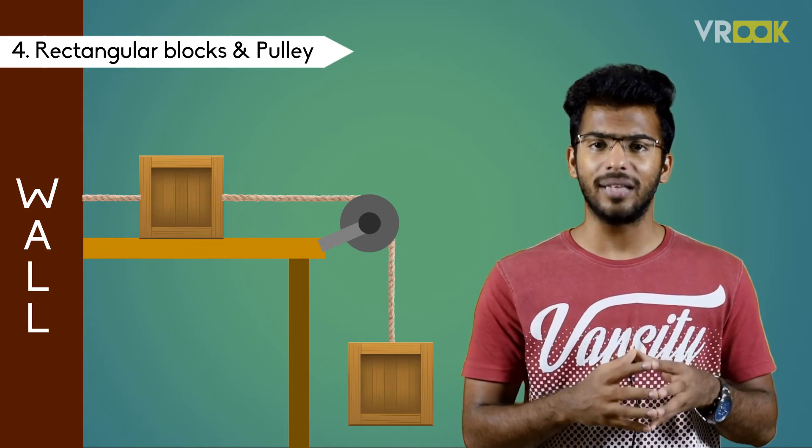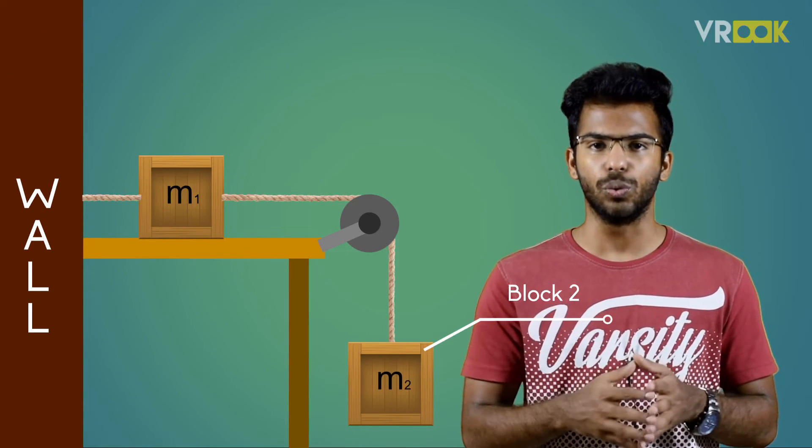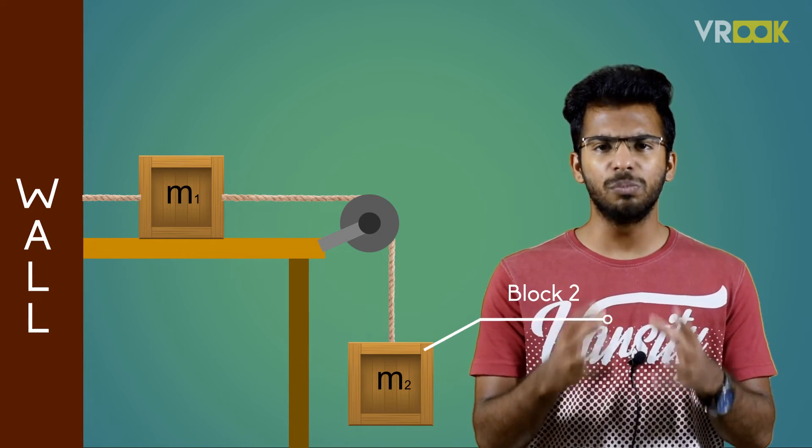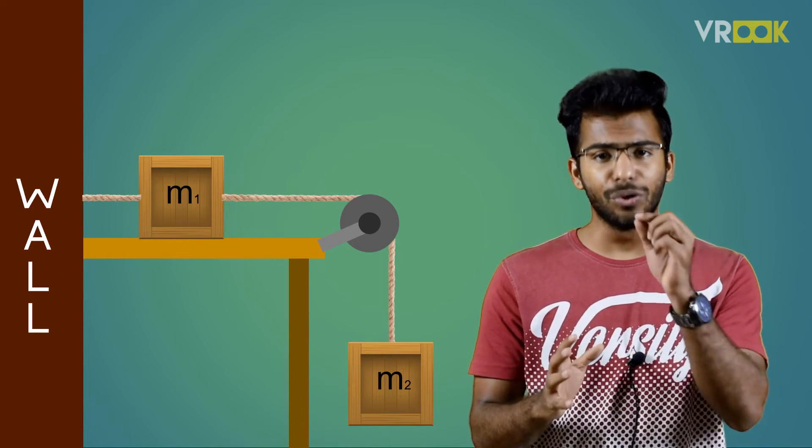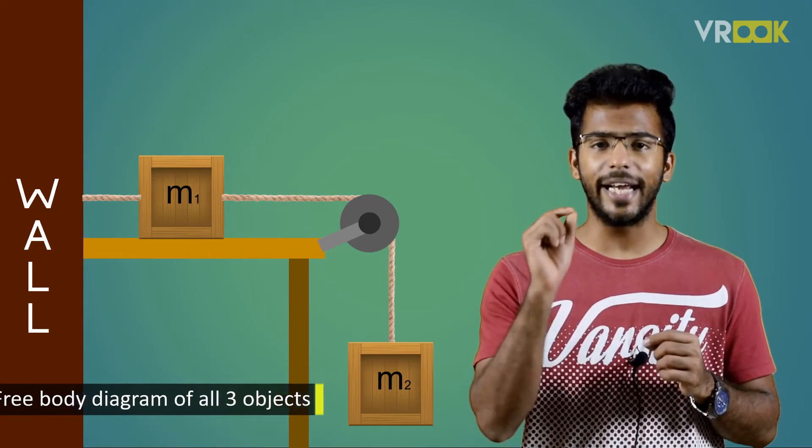Block 1 has a mass m1. Block 2 has a mass of m2. The pulley is smooth and massless. We need to draw the free body diagram of all three objects individually.